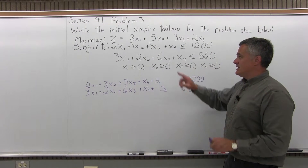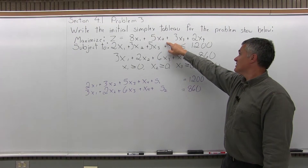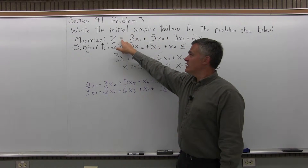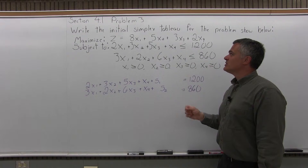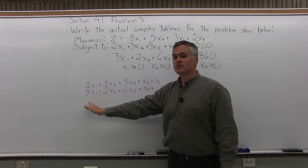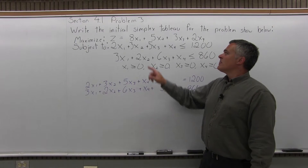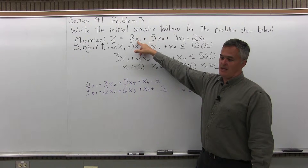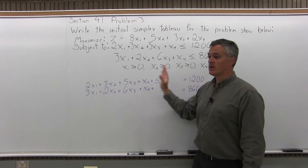The objective function z equals 8x1 plus 5x2 plus 3x3 plus 2x4 does have to go into the matrix. It already is an equation, so it does not need a slack variable, but it needs to be rearranged so that x1 in the objective function lines up with x1 in the other equations, and similarly for x2 and x3. Right now, the 8x1 is on the right-hand side of the equals, which is not going to work.